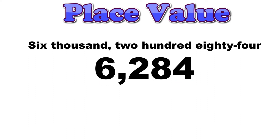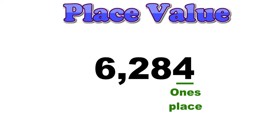The digit four is in the ones place. This lets us know that the number 6,284 has four ones. This is what four ones looks like.